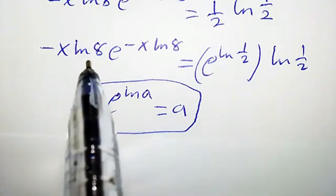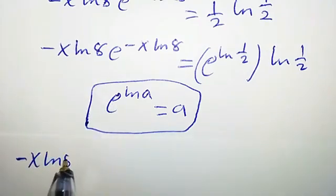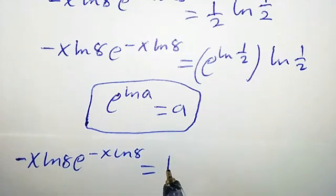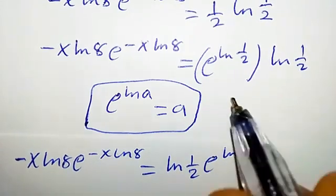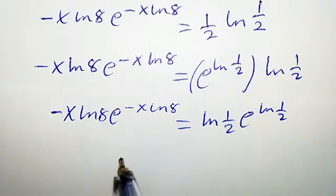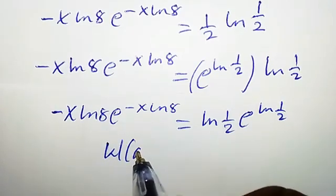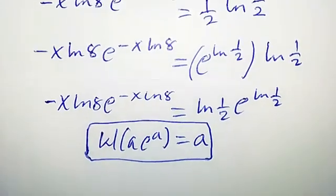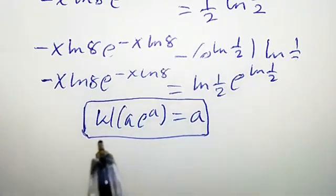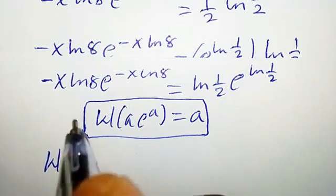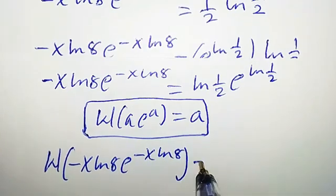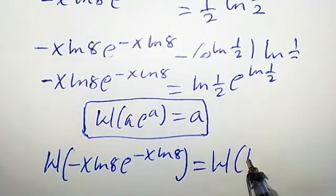So we have minus x times ln 8 times e to the power of negative x ln 8 equal to ln half times e to the power of ln half. So let's continue. At this stage, let us recall the Lambert W function formula. It says w of a times e to the power of a is equal to a. Take note of this. So by taking the Lambert W function of both sides, we are going to have w of negative x ln 8 times e to the power of negative x ln 8 equal to w of ln half times e to the power of ln half.